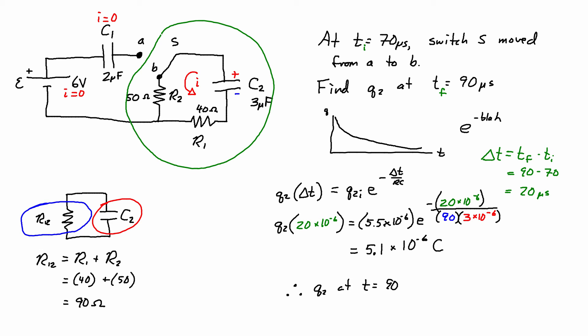So I can say Q2 at T equals 90 microseconds is equal to 5.1 microcoulombs and that's the end of the problem.